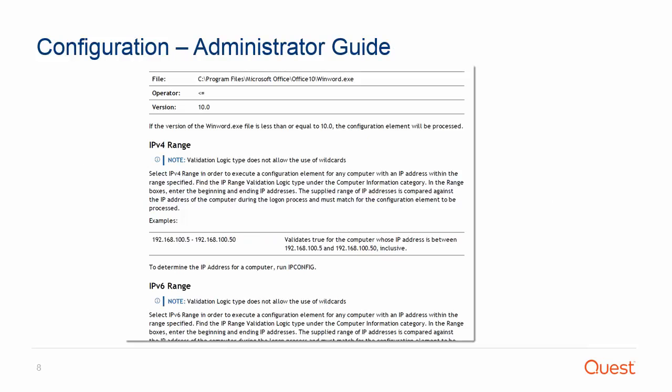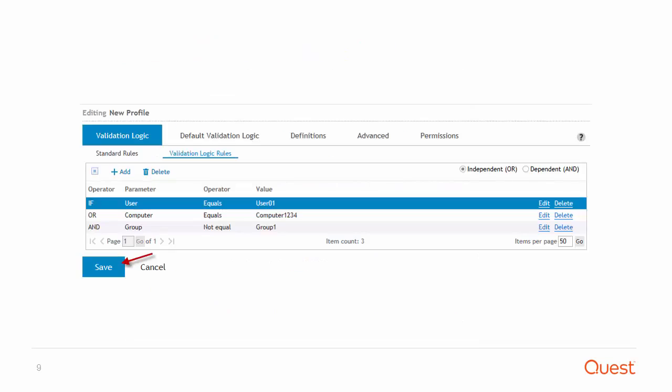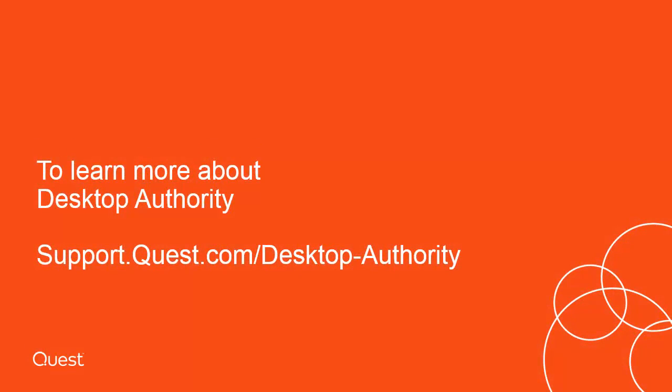To get an in-depth breakdown of each validation logic type and how to configure it, view Desktop Authority's administrator guide. Once the validation logic is configured the way you want, save it and replicate the changes. This concludes this video. To learn more about Desktop Authority, visit support.quest.com/desktop-authority.